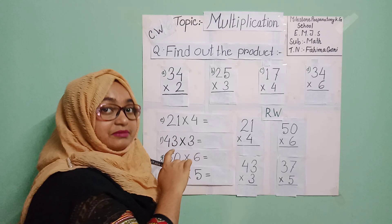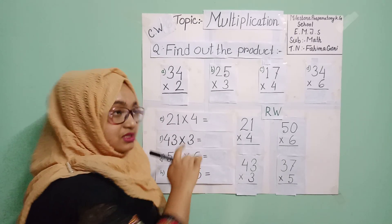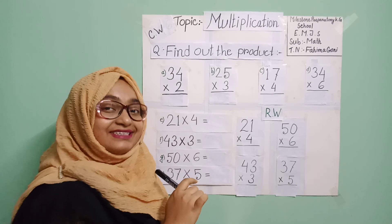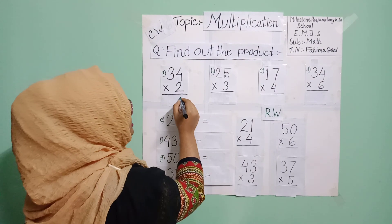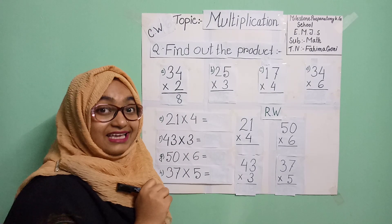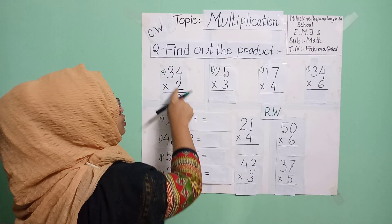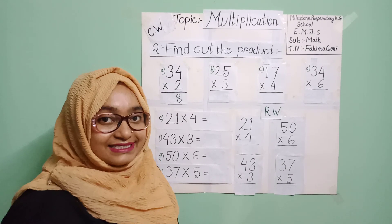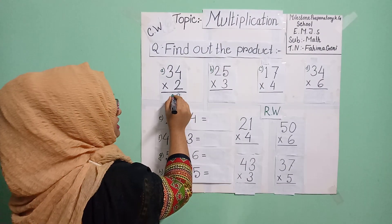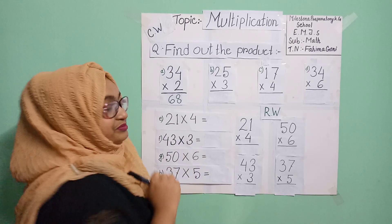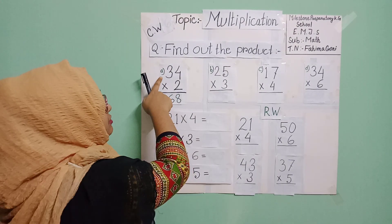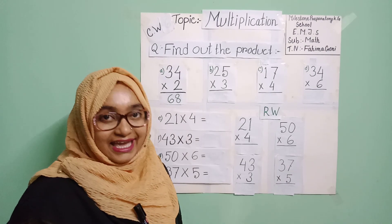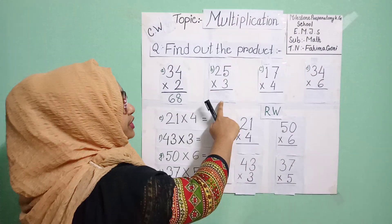Two fours are eight — very good! I know all of you have given me the answer: eight. Then two threes are — what? Two threes are six. So the answer is 68. Very good!